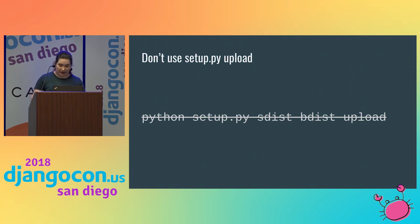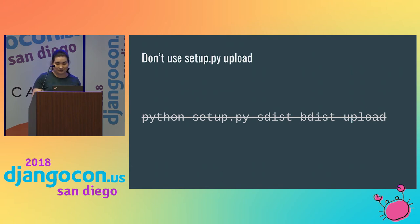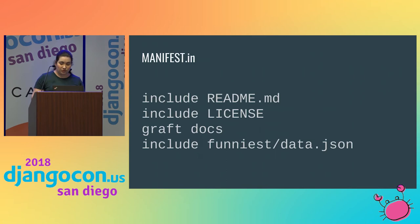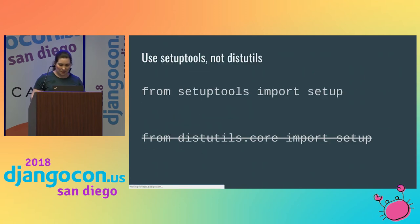Setuptools provides a command line tool: python setup.py upload. But depending on your machine's configuration, it may not use HTTPS, so it's a good idea to use Twine instead. You should also consider including non-code files like your license, README, and documentation in your package. You can do this by passing include_package_data=True, which will include the files listed in your MANIFEST.in. This is a small manifest that can get quite long, and there's a tool for checking it called check-manifest.